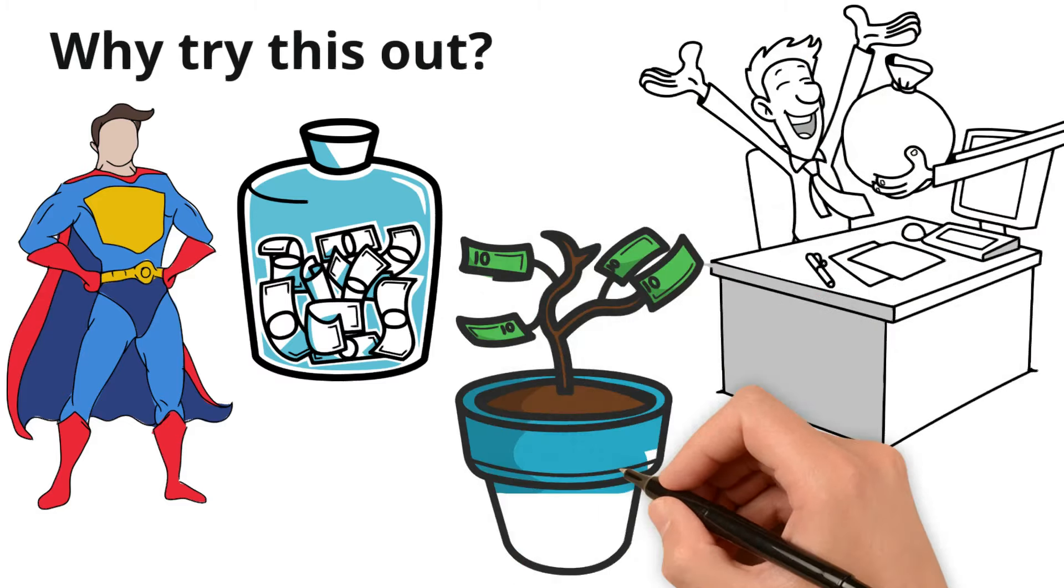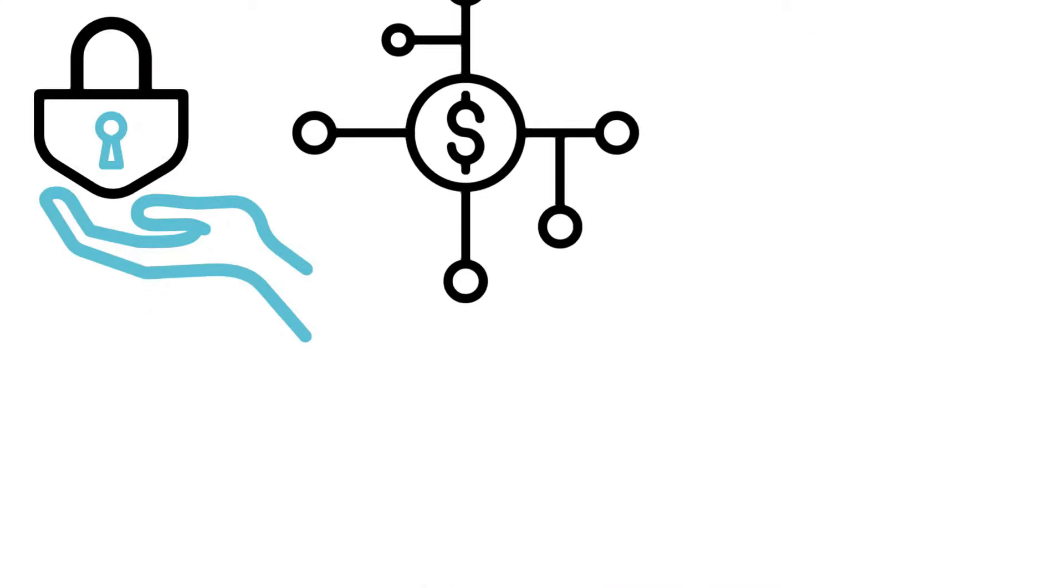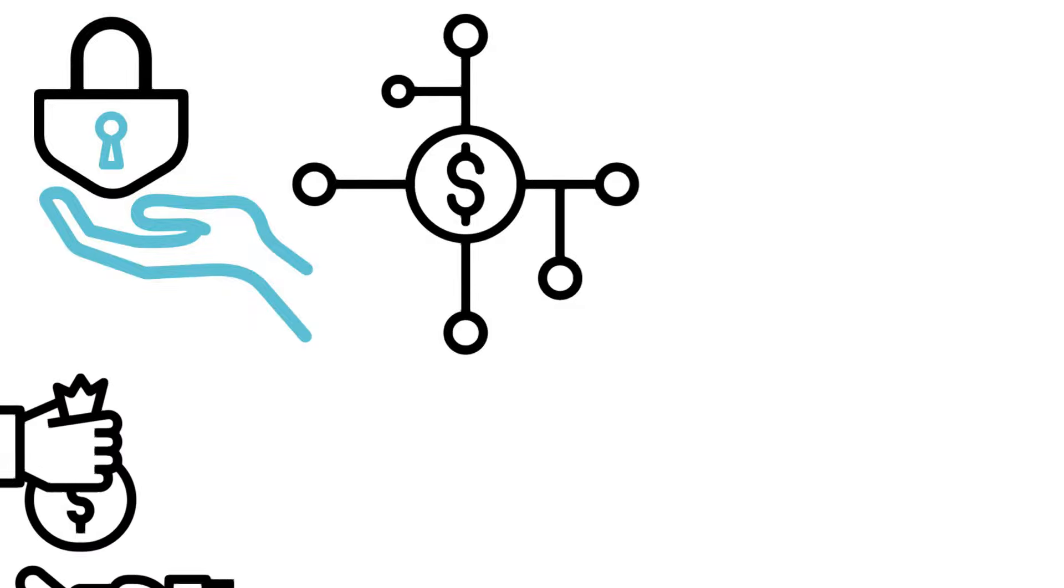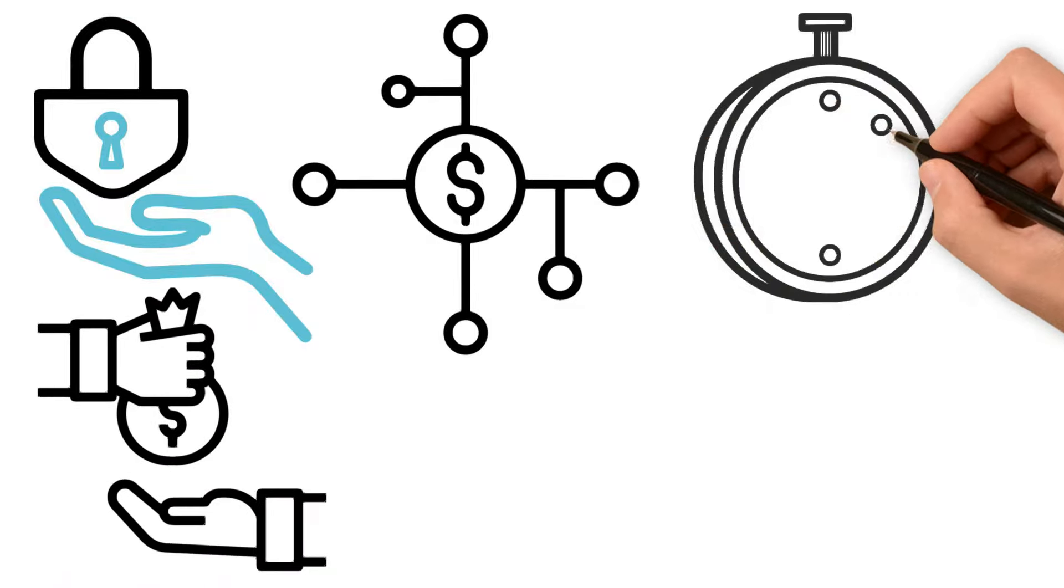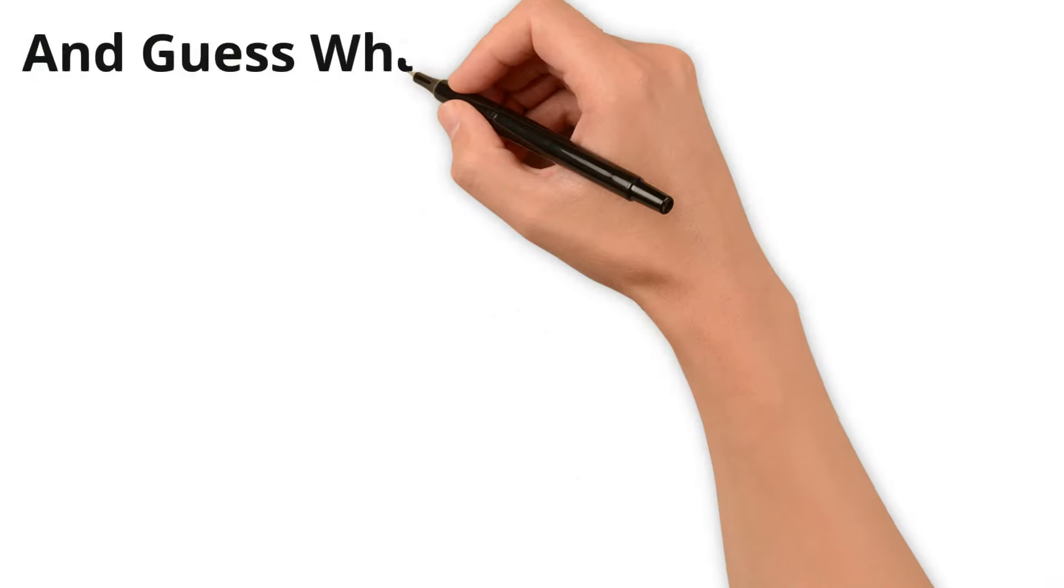To keep it safe, don't lend all your money to one person. Spread it out to a few, so if someone's late paying back you're not stuck. It's playing the lending game with smarts. And guess what?